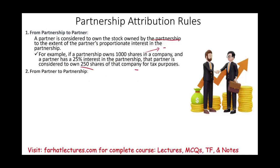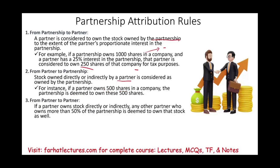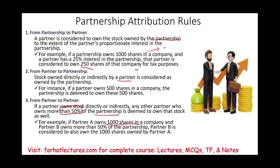It can also go from partner to partnership: stock owned directly or indirectly by a partner is considered owned by the partnership. For example, if a partner owns 500 shares in a company, the partnership is deemed to own those 500 shares. It can also transfer from partner to partner: if a partner owns stock and another partner owns more than 50% of the partnership, that second partner is deemed to own the stock as well.